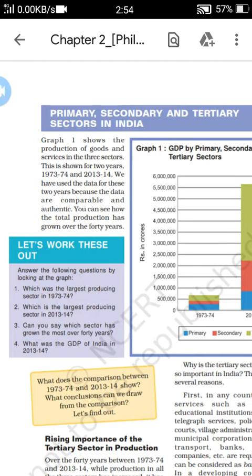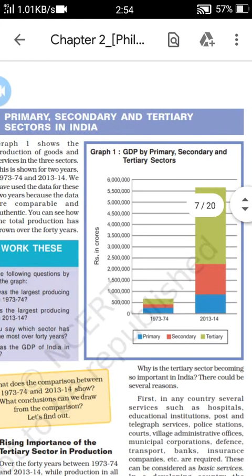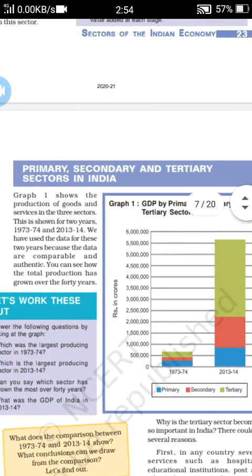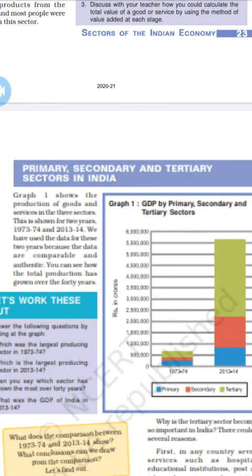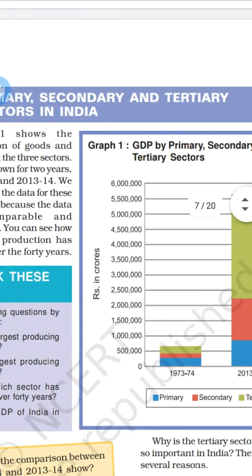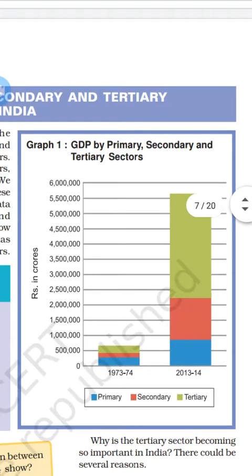That subtopic is primary, secondary, and tertiary sectors in India. When we look at this graph showing GDP — that is Gross Domestic Product — it shows the progress of goods and services in the three sectors from 1973-74 to 2013-14. On the left side we have rupees in crores, and along the bottom we can see primary, secondary, and tertiary sectors. All three sectors show more development in 2013-14.